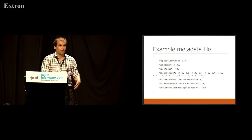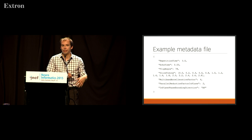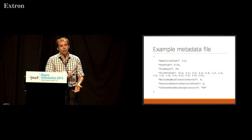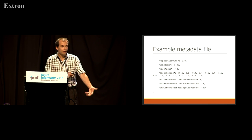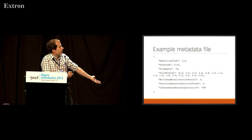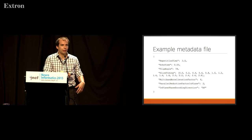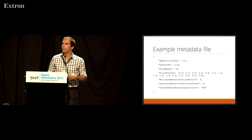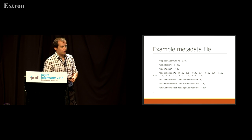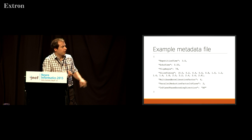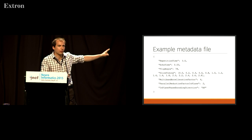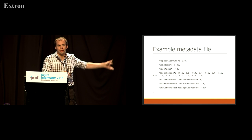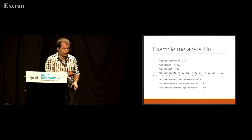This is an example of a key-value store — a JSON file that can encode certain properties of the scan itself, for example repetition time, echo time, and flip angle — things you would usually want to know about the scan. We follow the naming conventions from DICOM here, so again we don't reinvent the wheel.